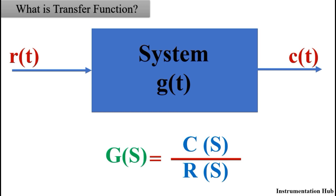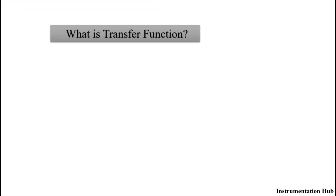Understood? For now, just understand that if you have to calculate the transfer function of a system, you have to take the ratio of the output Laplace transform to the input Laplace transform. It is that simple. If you have any doubt till now, please let me know in the comment section. Now, why is transfer function used in control systems?